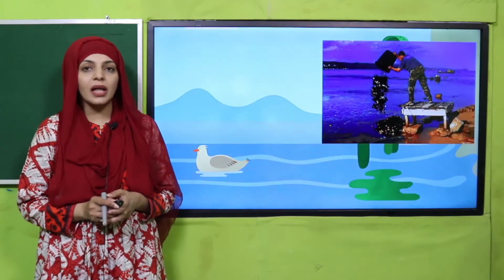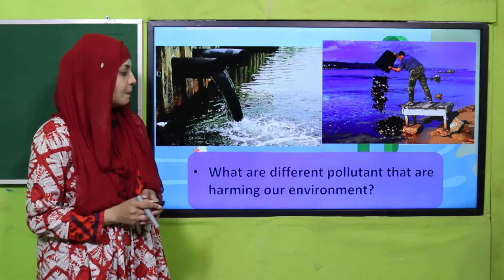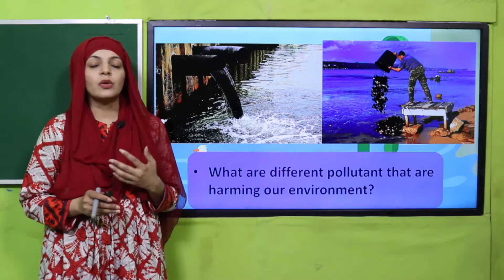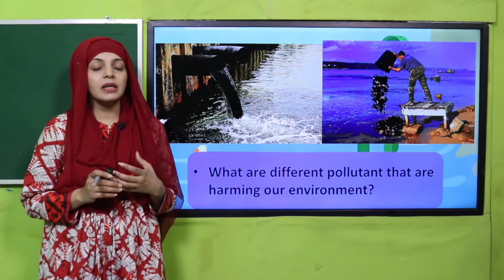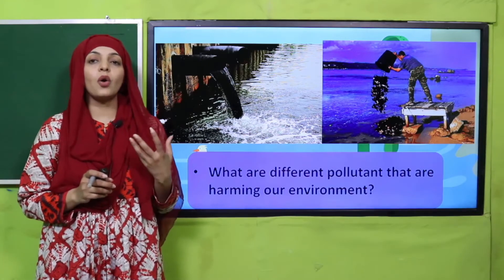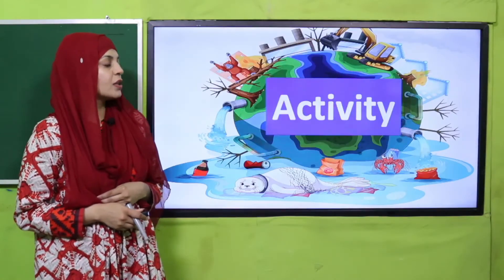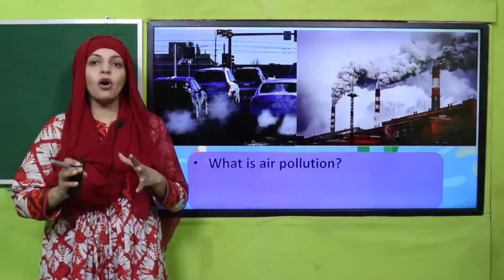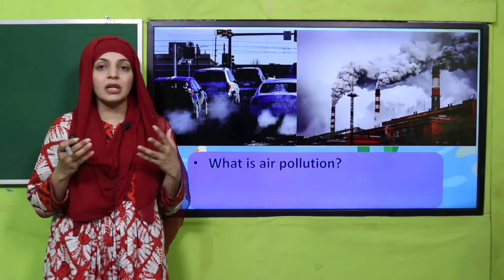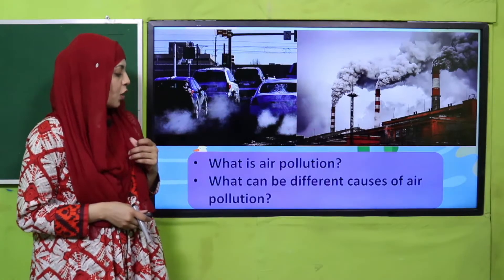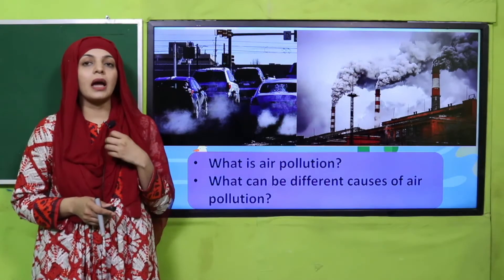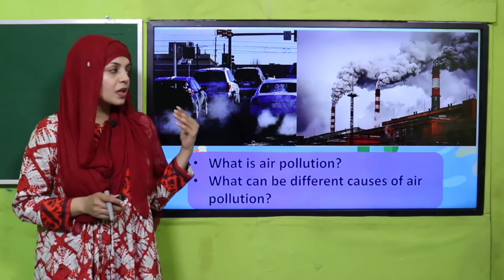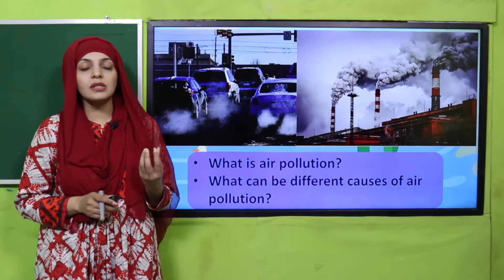Before that, let's quickly recap what we did in the previous lecture. Look at these pictures very carefully and tell me what are the different pollutants that are harming our environment. They could be garbage, chemicals, carbon dioxide, the burning of fossil fuels, and energy — they can all be pollutants. Now look at these pictures and tell me: what is air pollution? The addition of any bad thing to the air which has a bad effect on life — that is air pollution. The causes include smoke coming out of cars, lack of trees, and burning of fossil fuels.